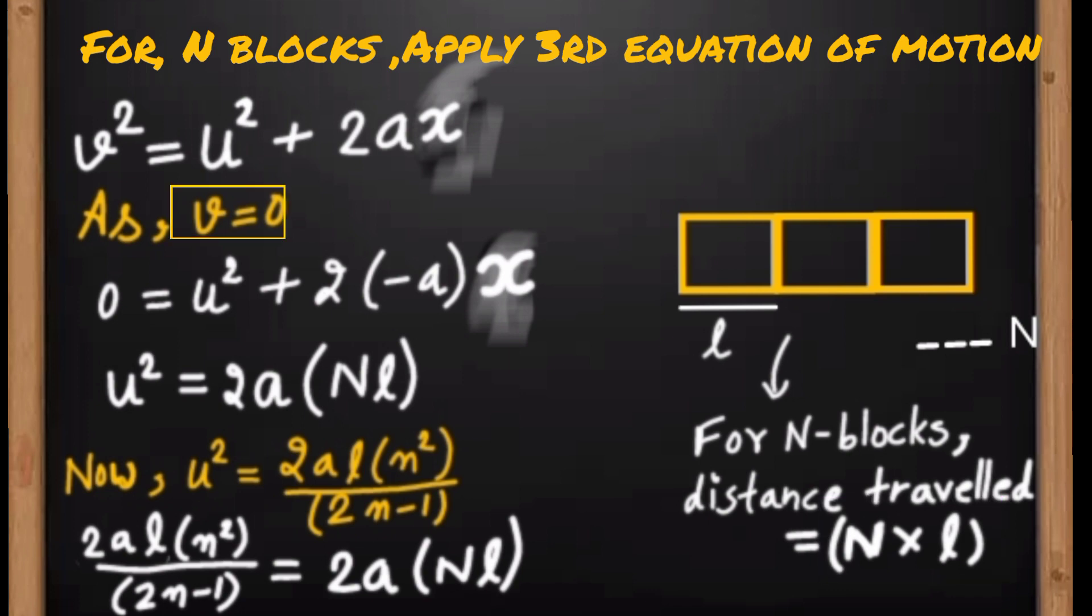Substituting values of v, u, and x in third equation of motion: v is zero, so v² = 0 = u² + 2 times—as the bullet is retarding, this will be -a times distance traveled by the block, which is x.